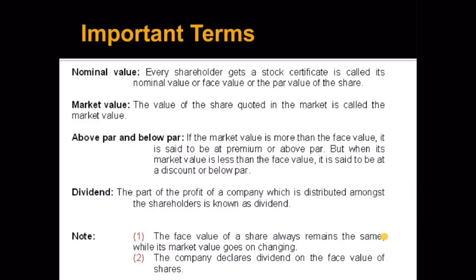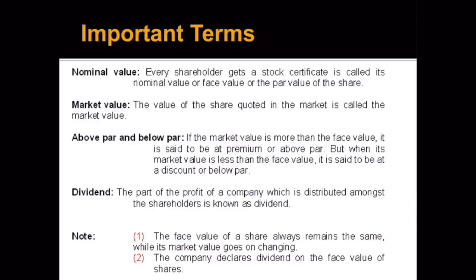Market value keeps on changing — sometimes it may rise and sometimes it may fall. When the market value increases, that is, it is higher than the face value, for example, the nominal value of one share is rupees 10 but it is available in the market for rupees 12. It is higher than rupees 10 by rupee 2, so the person purchasing it from the market will have to pay 2 rupees extra, and that is called a premium. In case 2, the same share with a face value of rupees 10 is available in the market at rupee 8.